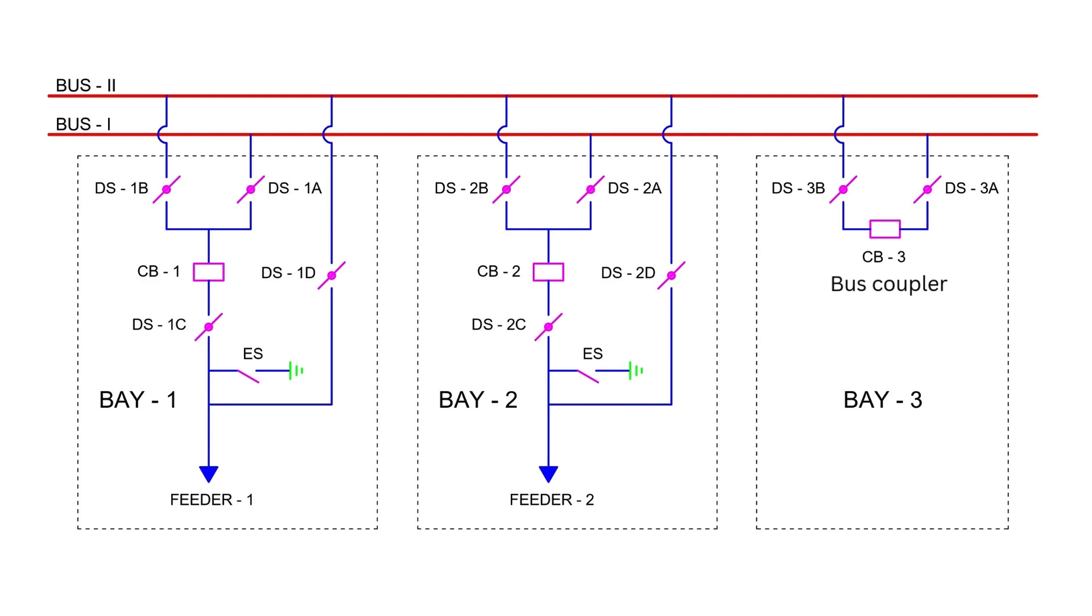Each feeder with its associated switching devices is referred to as a bay. In our schematic, we have three bays: feeder 1 bay, feeder 2 bay, and the bus coupler bay. The bus coupler bay, equipped with CB3, serves the critical purpose of linking bus 1 and bus 2. Under normal conditions, CB3 remains closed, ensuring seamless operation between the two buses.